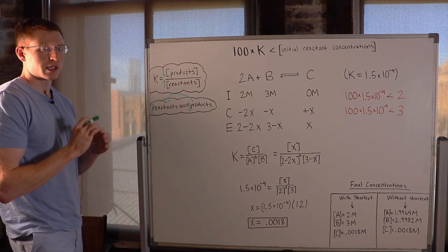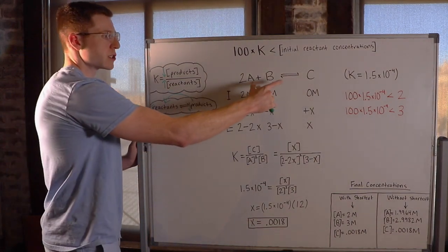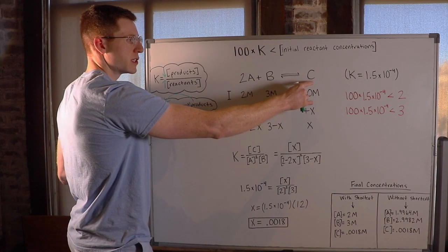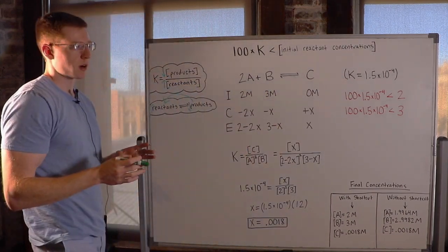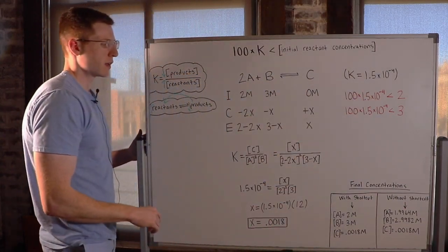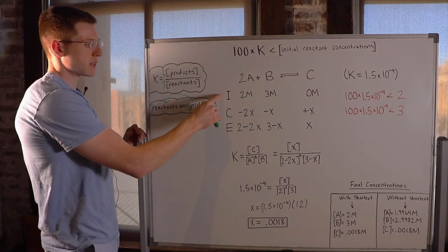So let's look at an example here to see if the shortcut rule applies. So I have an example reaction, 2A plus B is in equilibrium with C. And I'm going to tell you the K, or the equilibrium constant for this reaction, is 1.5 times 10 to the negative 4. And you can see I've already filled out the ICE table here.